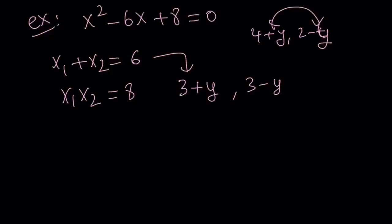Let's take a look at the product. When I multiply these two things, 3 plus y and 3 minus y, I get from difference of two squares 9 minus y squared, and that should equal the product, which is 8. 9 minus what number equals 8? The answer is 1, because 9 minus 1 equals 8.